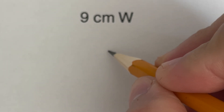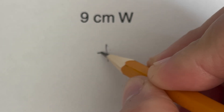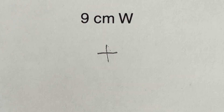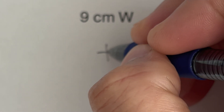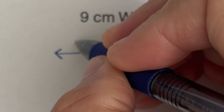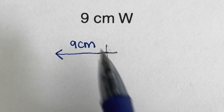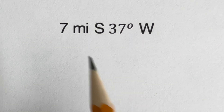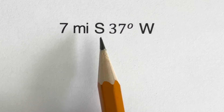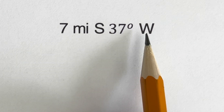The second one says nine centimeters west. We draw the direction guide, and going to the west would be going to the left. This line represents nine centimeters west.